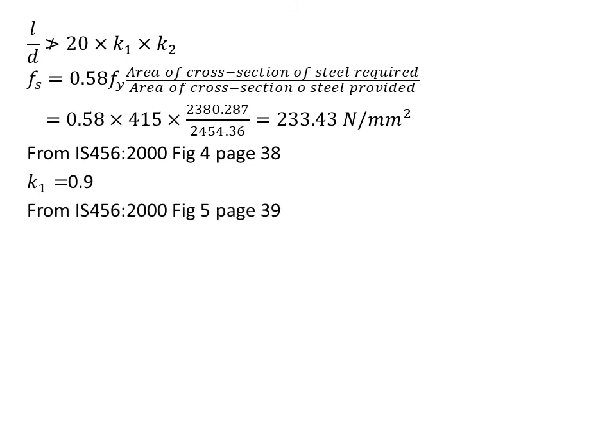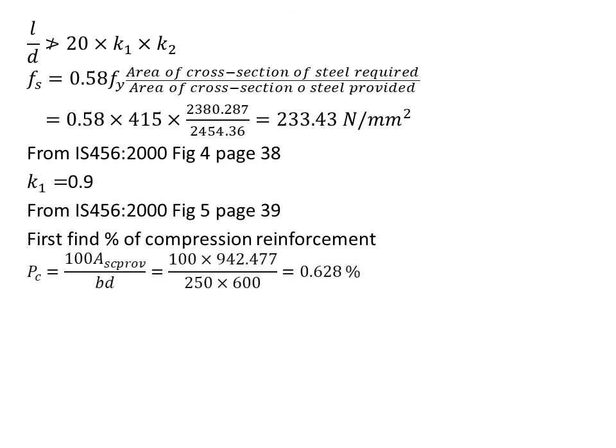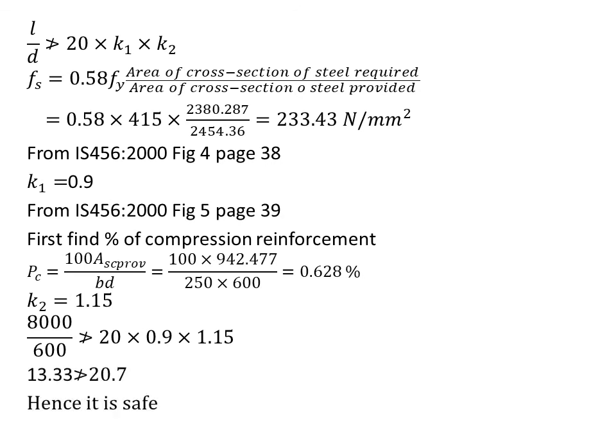Now we need to check k2. k2 is the modification factor for compression side, we get it from figure 5 on page 39. The x-axis is Pc, the percentage of steel in compression zone. To find Pc, that is the percentage of compression reinforcement, Pc equals 100 × Asc provided / bd. We substitute the value and get Pc. Then we check the graph and we get k2 equals 1.15. We substitute the values of L effective and effective depth. Then we see that it satisfies the condition and the design is safe.